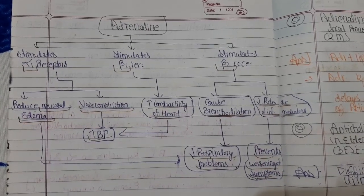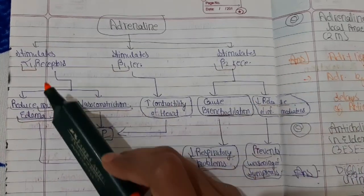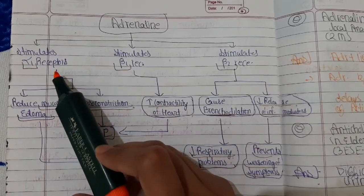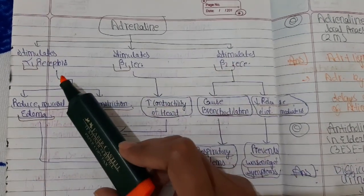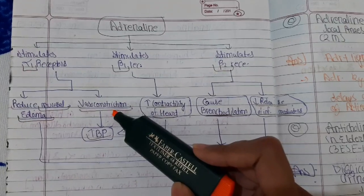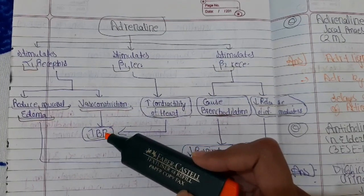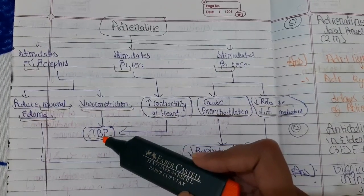In these patients, adrenaline stimulates three receptors: alpha-1 receptor, beta-1 receptor, and beta-2 receptor. By stimulating alpha-1 receptors, it causes vasoconstriction, which leads to increased blood pressure. In anaphylactic shock, the